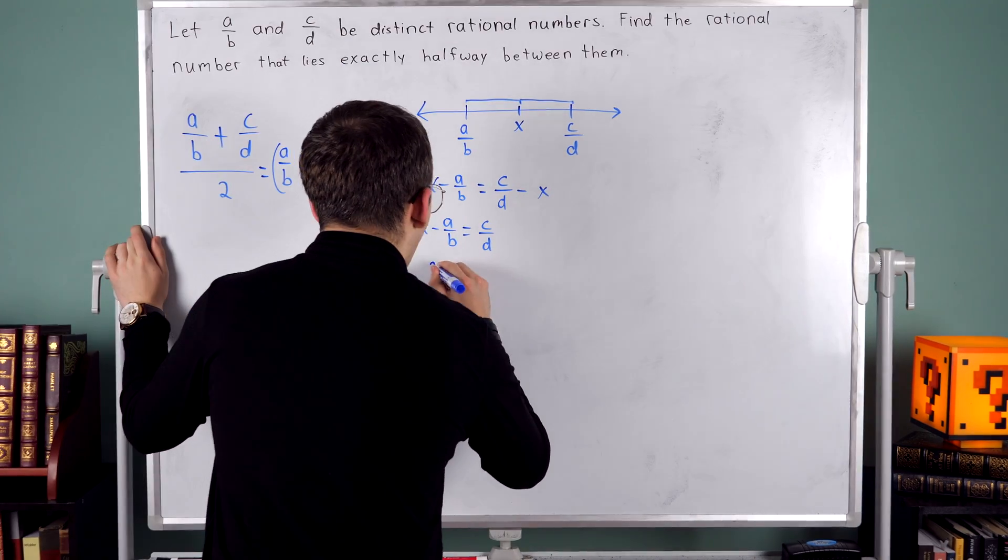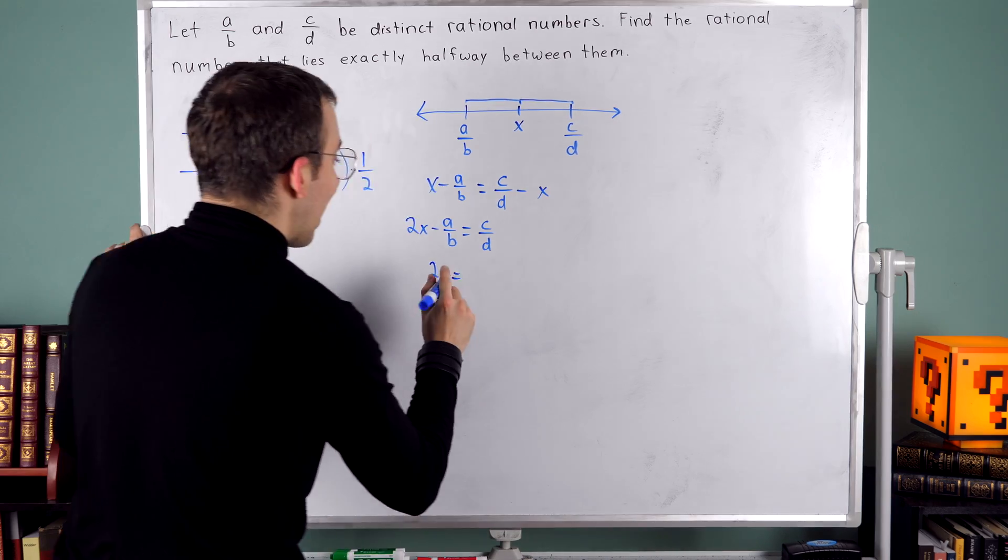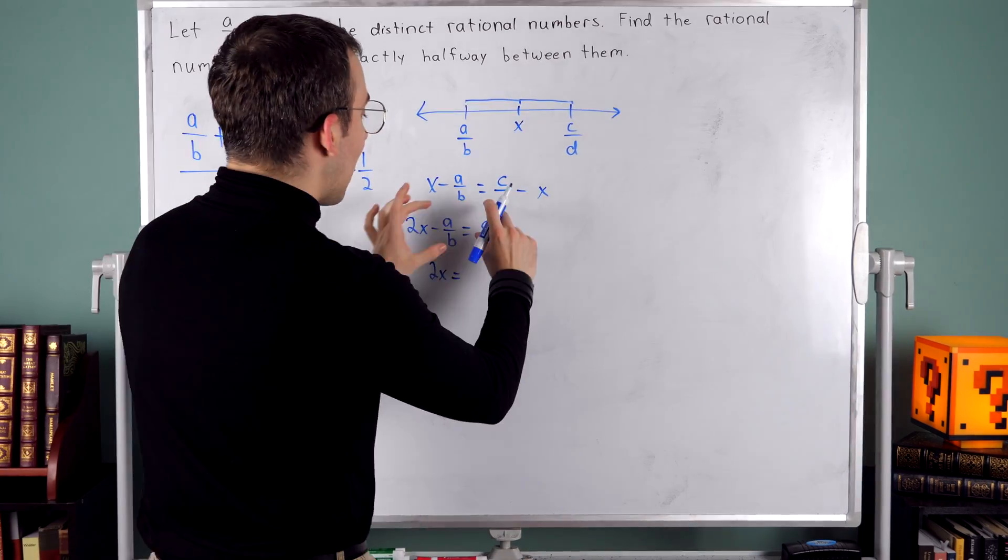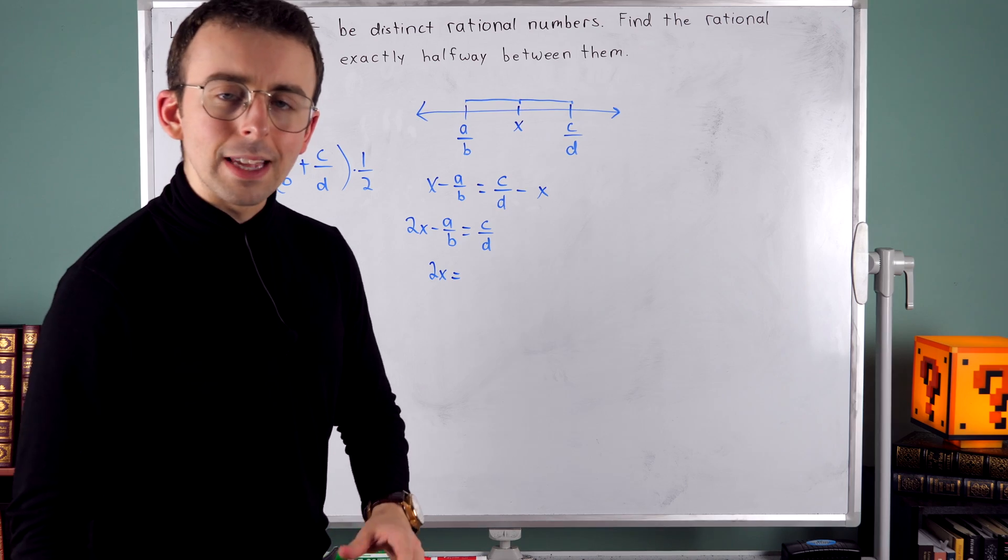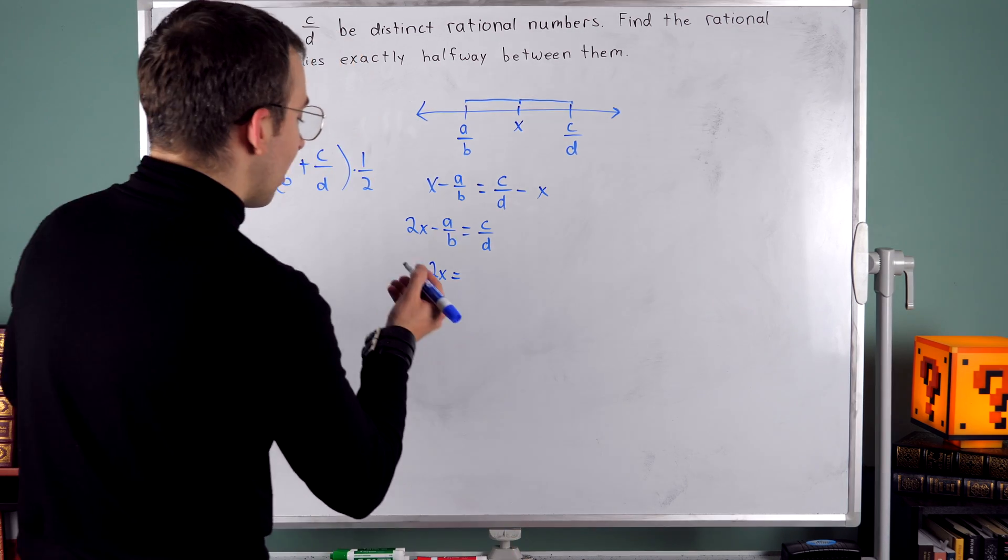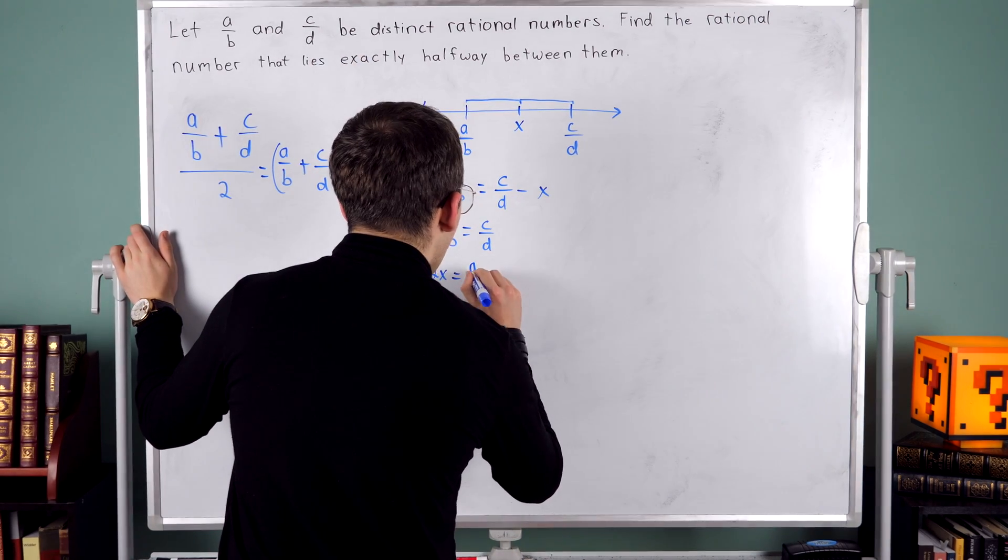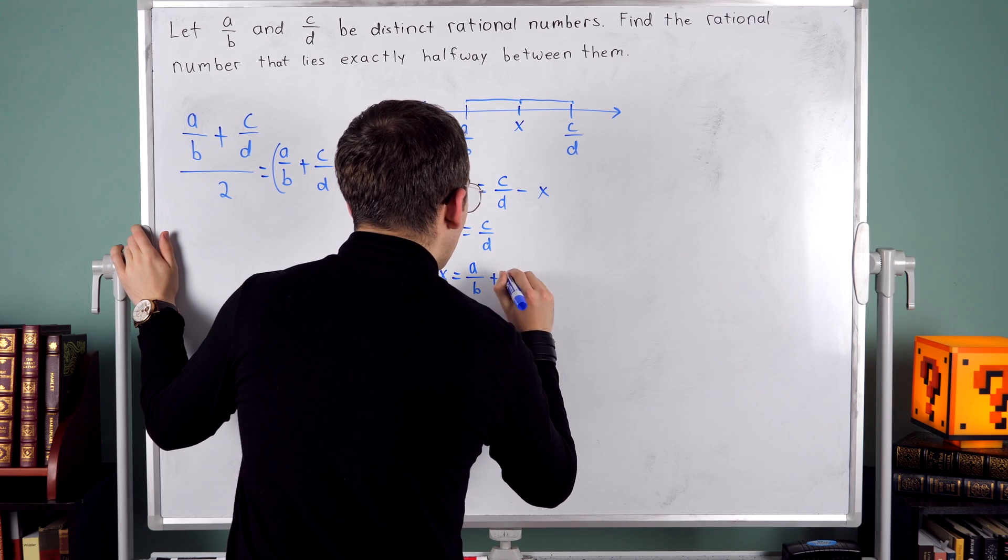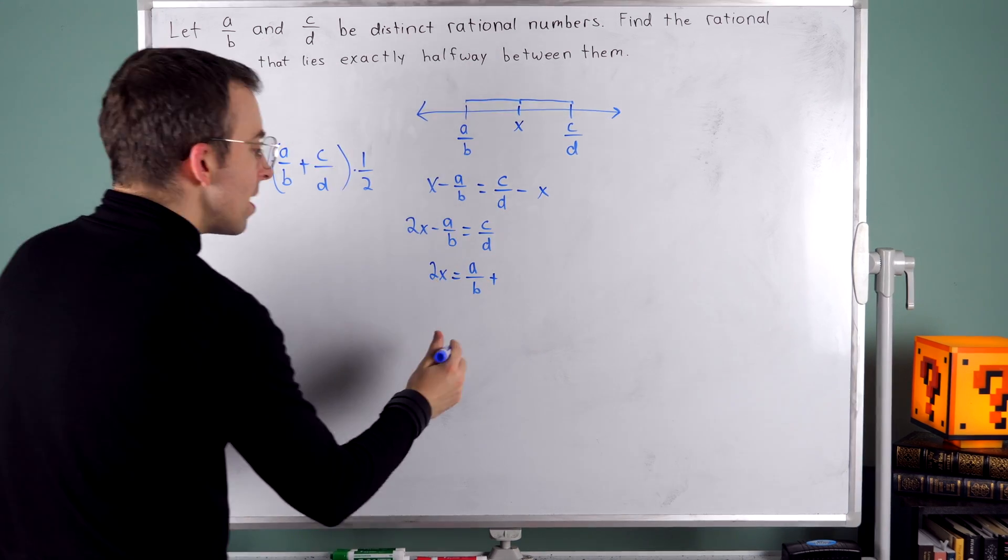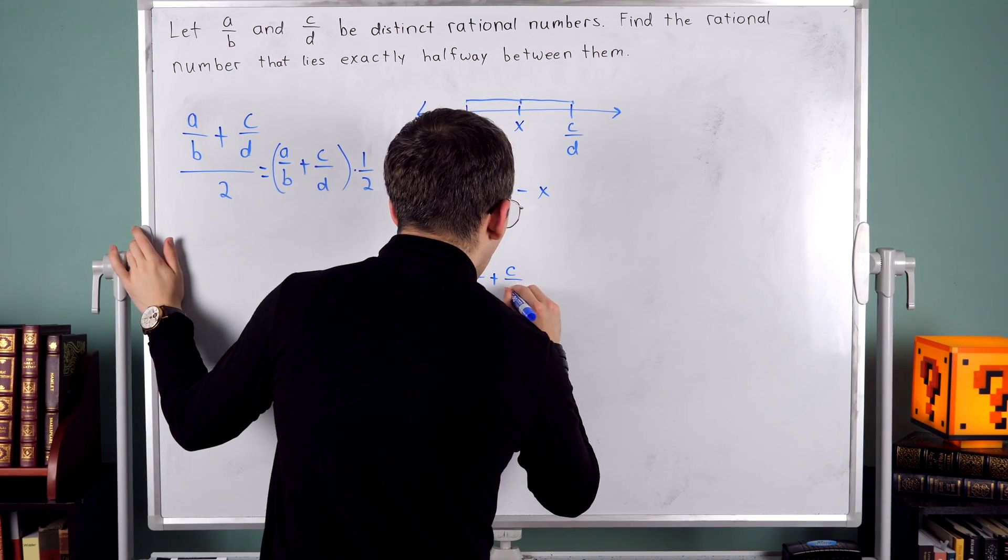Then on the left, all I'll have is two x. On the right, I'll have C over D plus A over B. The order of addition doesn't matter. So I'm going to write A over B first. So on the right, I have A over B plus C over D.